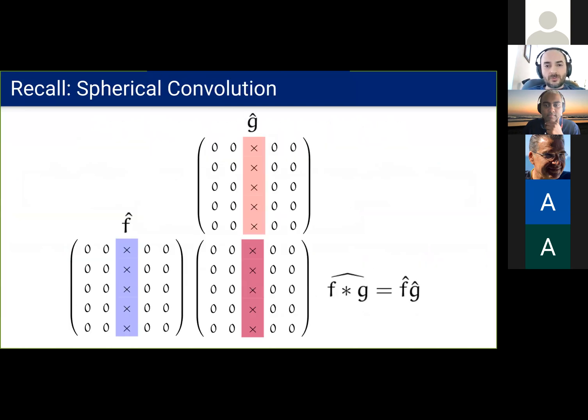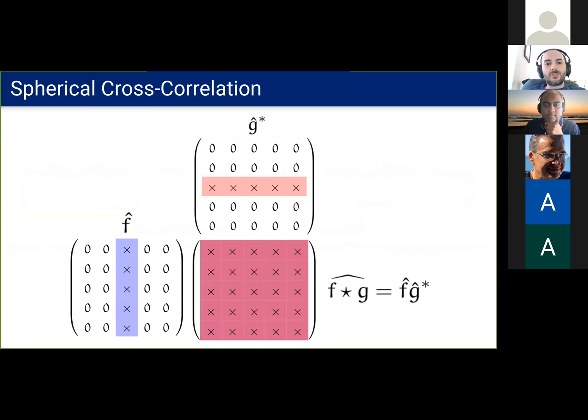Now recall the spherical convolution we just discussed. A related operation is the spherical cross correlation, which replaces the filter spectrum with its conjugate transpose. Note that in this case, the output no longer has the same sparsity patterns as the inputs. The output can in fact be a function of the group SO(3).